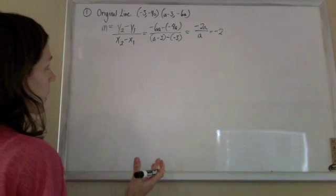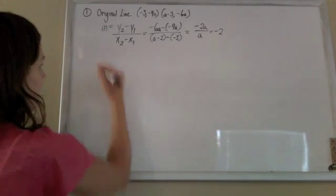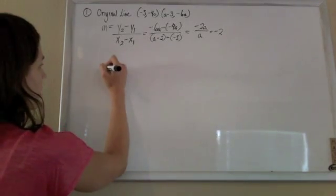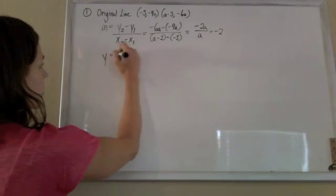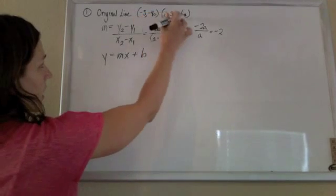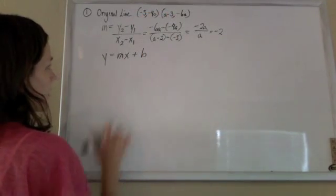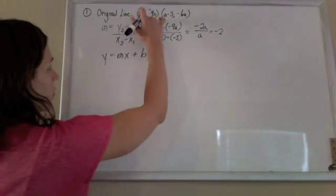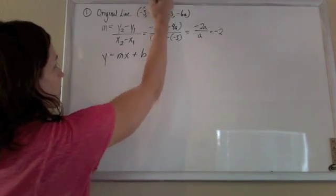It'd be nice to know the y-intercept as well. So let's find that. We know we have the formula of y equals mx plus b. And I can use either point I want to find out what b is. So choose your favorite point. I'll try this one here.